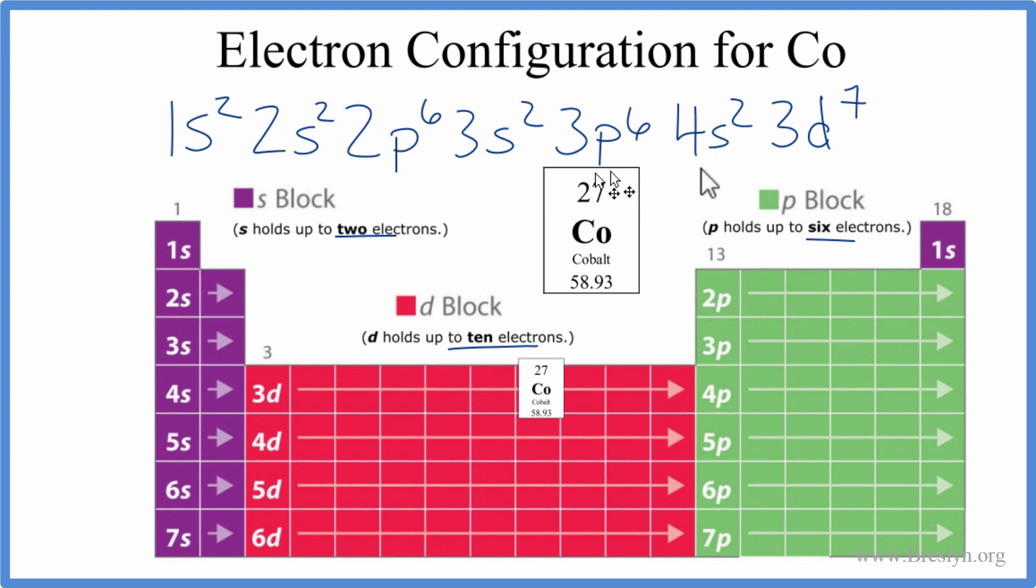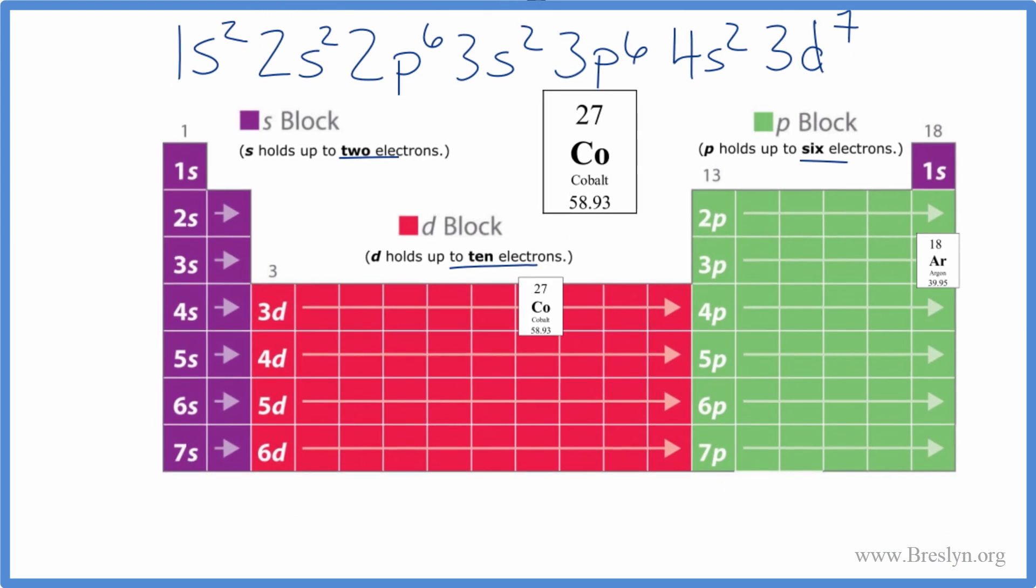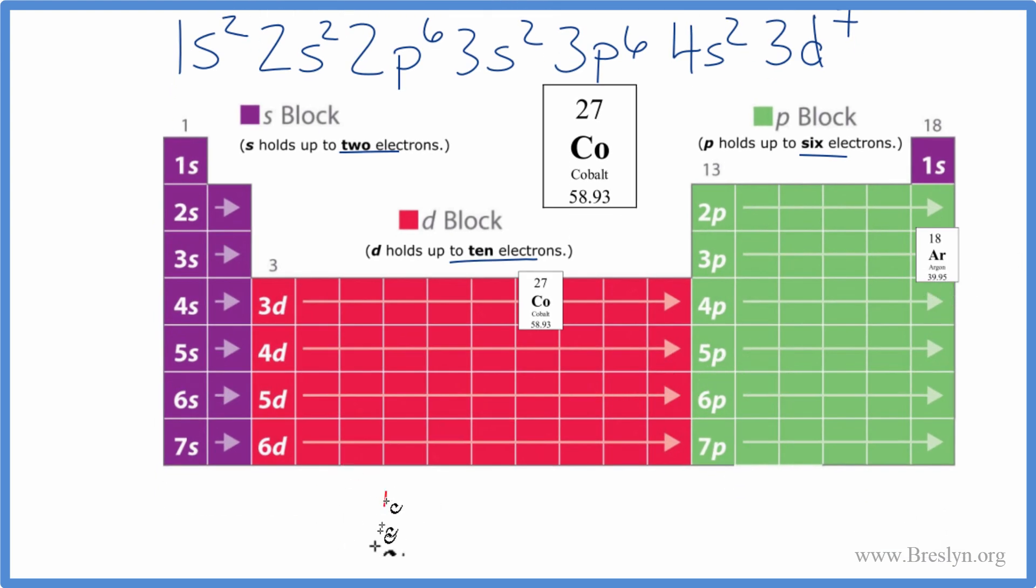We could write a condensed notation for this electronic configuration as well. So what we would do is find the noble gas before this row here, before cobalt, and that's argon. So we write argon, Ar, and we put brackets around it, and then we write what's after it.